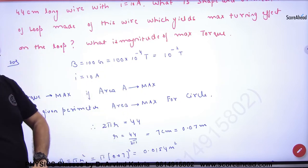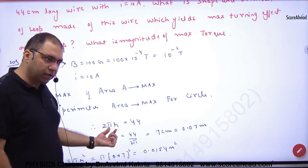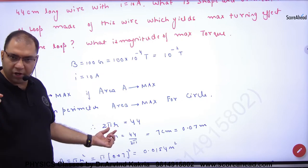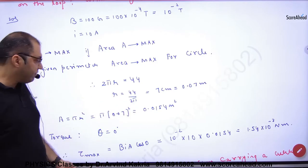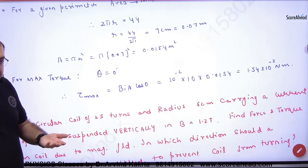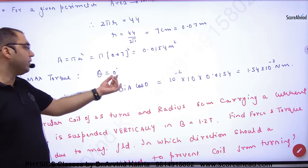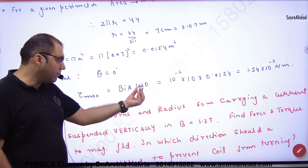So what will I make that length of 44 cm? Circle. So 2πr equals 44. Radius will come, then the circle will come. Then for maximum torque, cos angle, what should we do? Zero. So that this also will be done.